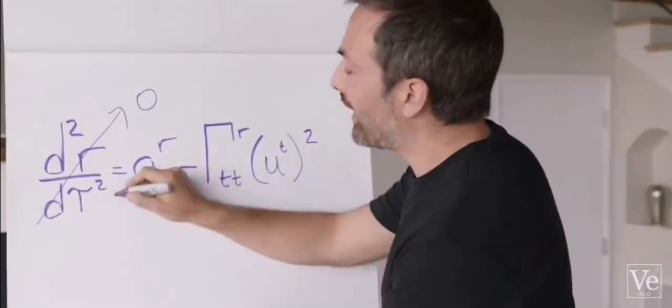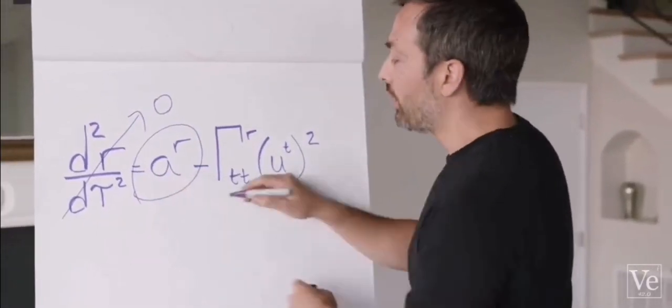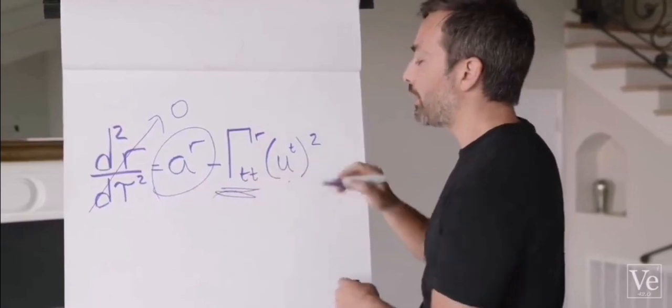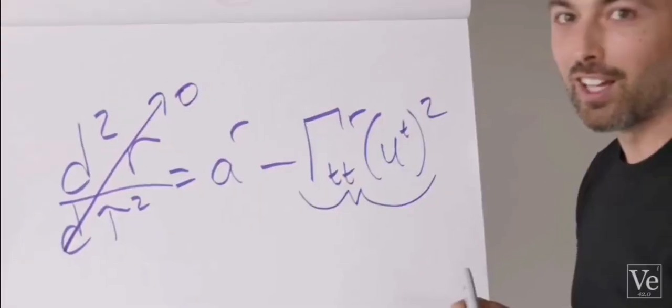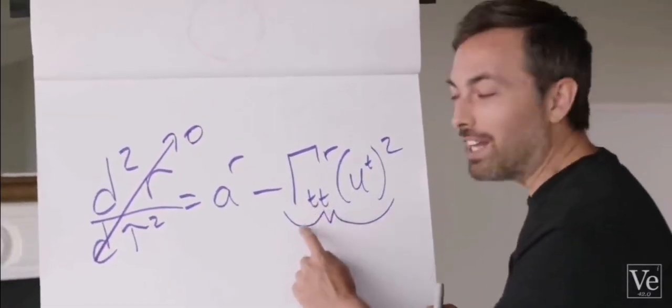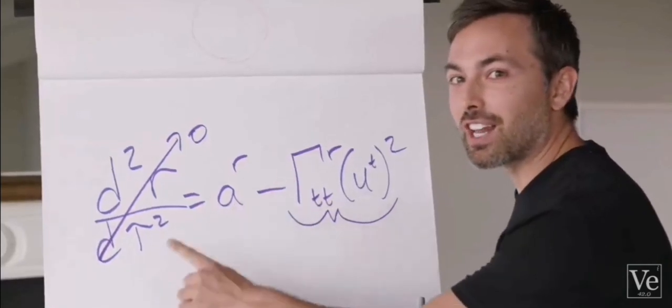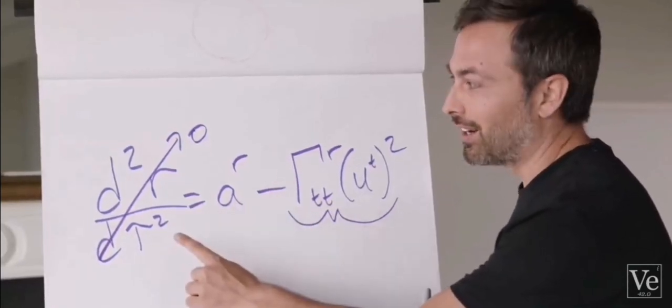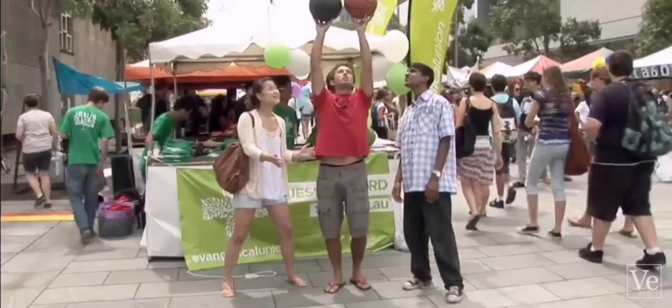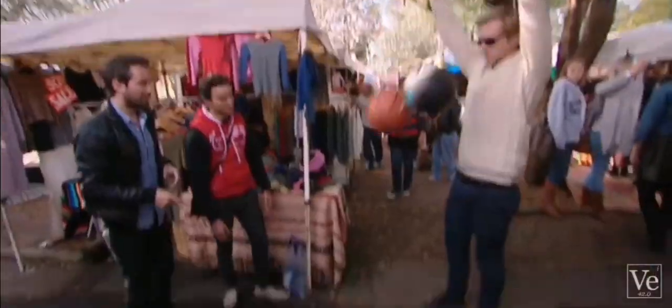Which means your acceleration must be exactly equal to this curvature term times your velocity through time squared. So in curved space-time, you need to accelerate just to stand still. A lot of this is why all objects fall at the same rate.